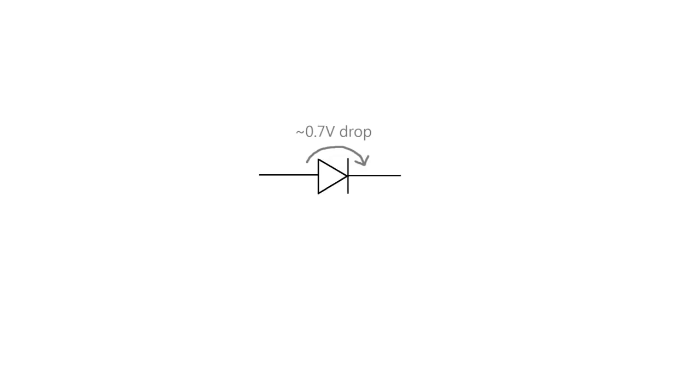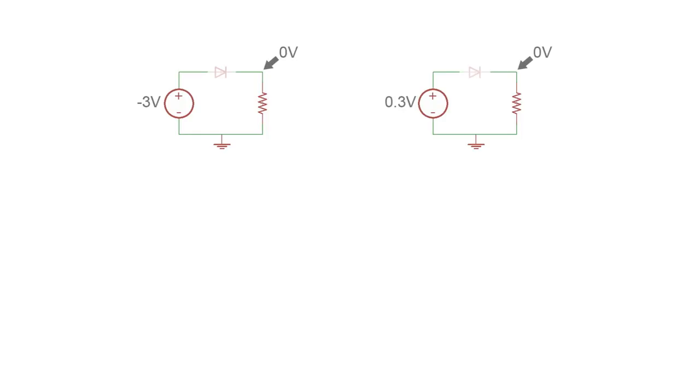With a negative voltage on the input, the diode can't turn on, so you get nothing on the output. With 0.3 volts on the input, it's still not enough to turn on the diode, so again you get nothing. With 0.9 volts on the input, it's just enough to turn on the diode, but because of the voltage drop, you only have 0.2 volts left. And with 10 volts minus 0.7 volts, you get 9.3 volts.